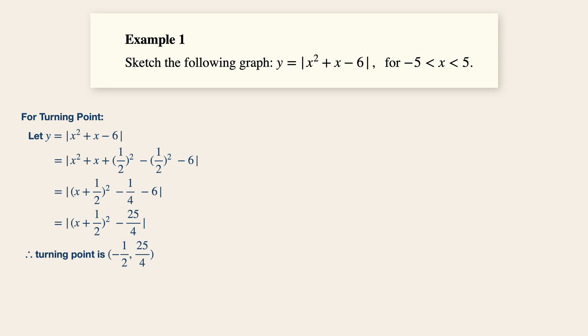After you have found the turning point, the next step is to find the y-intercept. All these steps are actually to ensure that you have the right data so that you can plot it on the sketch of the graph. The y-intercept happens when x is equals to 0, and y is equals to modulus minus 6, which gives us a value of 6.